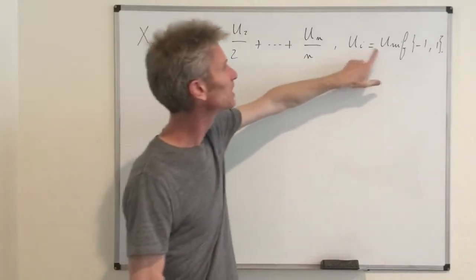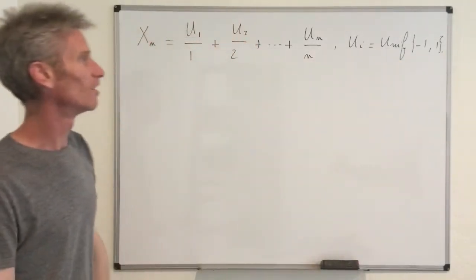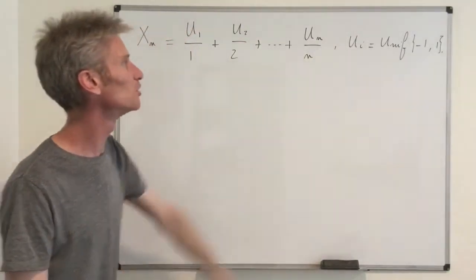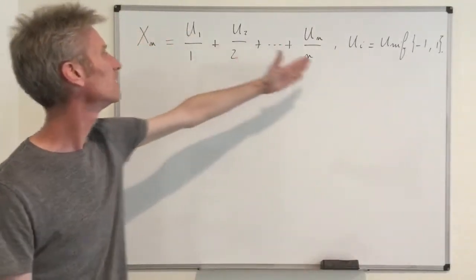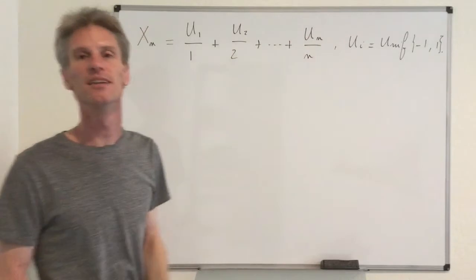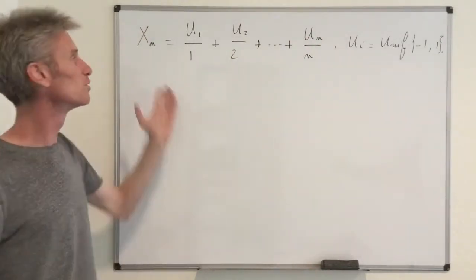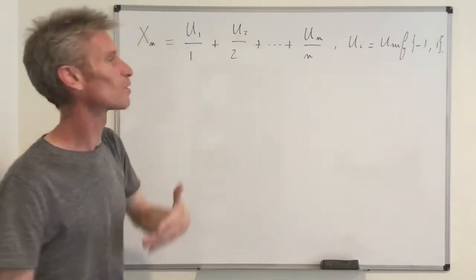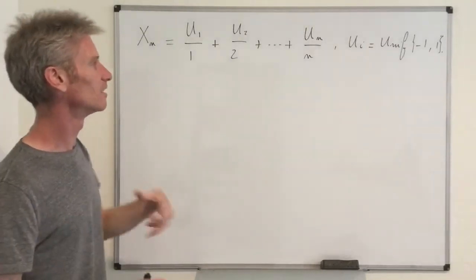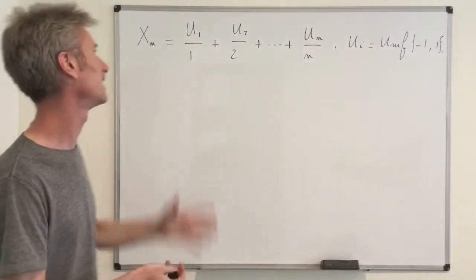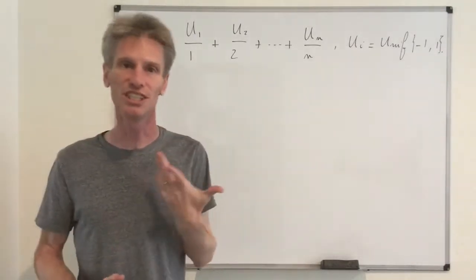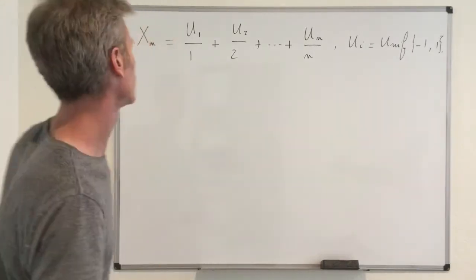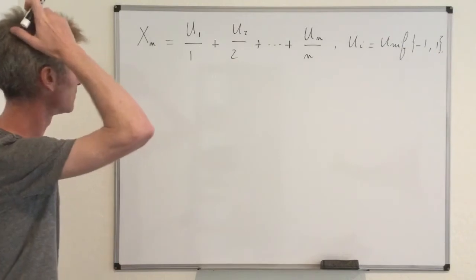In fact, we have something better: since the ui are uniform on {−1, +1}, the expected value of ui equals zero. Using this properly, it turns out the process xn is a martingale. The next step will be to check that this process is indeed bounded in L1 to apply the martingale convergence theorem. So step one: let's check whether this process is a martingale.